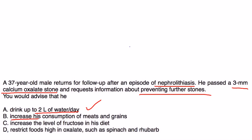Increase his consumption of meats and grains. Well, that's bad advice because you actually want to decrease the consumption of meats and grains, because the protein can contribute. Increase the level of fructose in his diet - that's probably not good advice. And restrict foods high in oxalates such as spinach and rhubarb - this actually has not been shown to be effective in reducing stone formation. So by process of elimination, it's A.